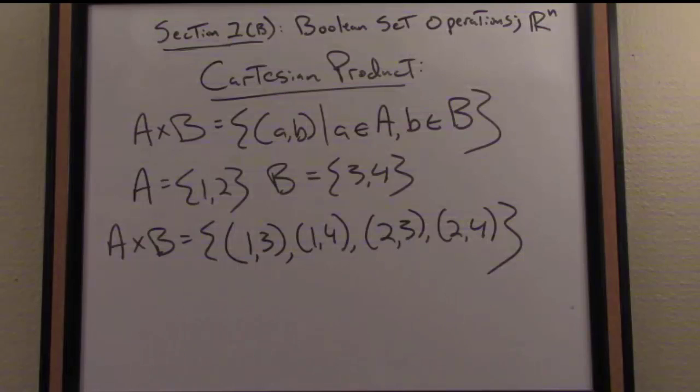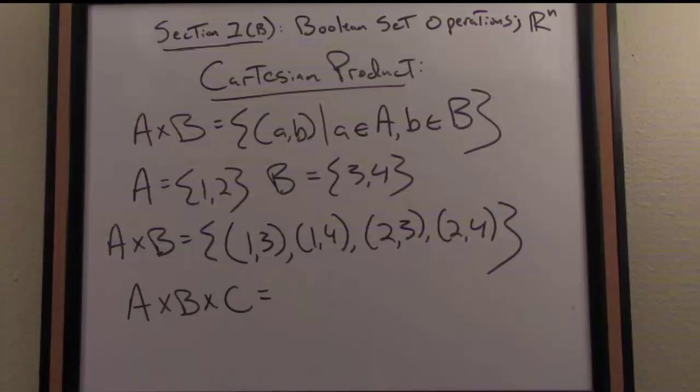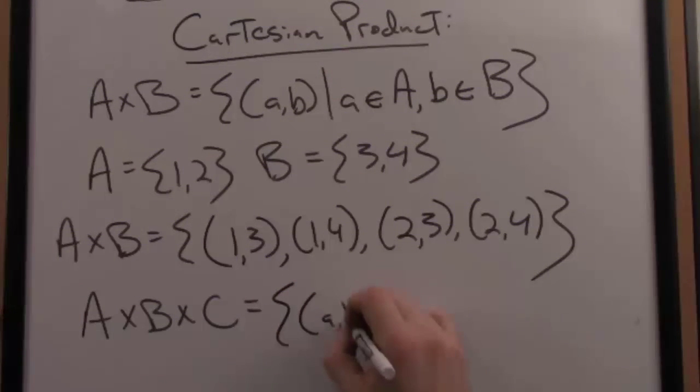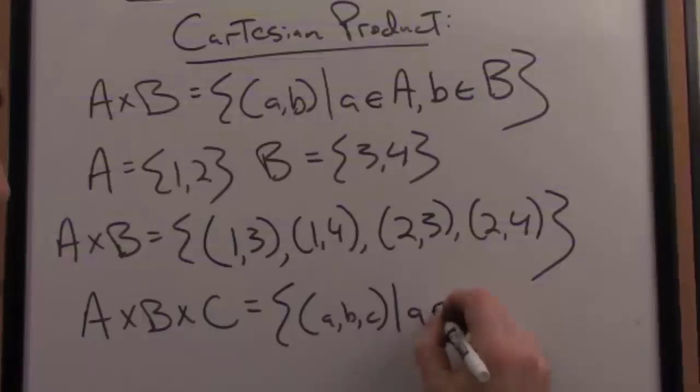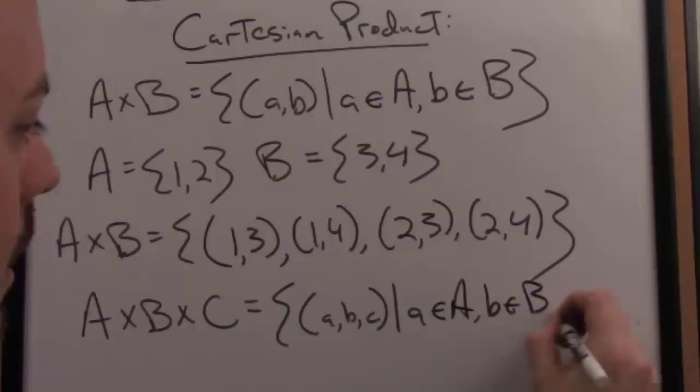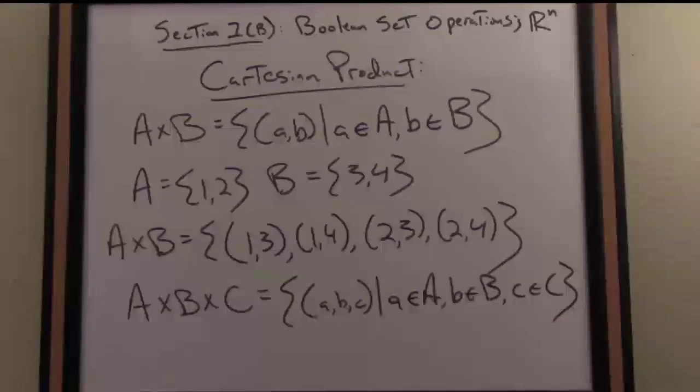Now, by extension, I could similarly define the Cartesian product of three sets. Let's say A, B, and C. I'll just write the general definition here. The set of all triplets now, A, B, and C, such that the first element comes from the set A, the next element comes from the set B, and the final element comes from the last mentioned set C.